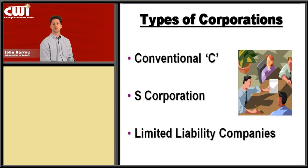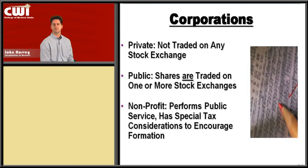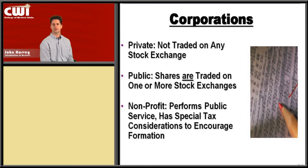Now let's talk about corporations. We have the conventional corporation or C corp, the S corporation, and the limited liability company. In corporations, if it's a private corporation, the stock or equity in the business is not traded on any public stock exchange. When you think about Google or Microsoft, you can buy shares on an exchange — but when it's a private company, those shares aren't available to the public. That's the difference between a private and a public corporation.